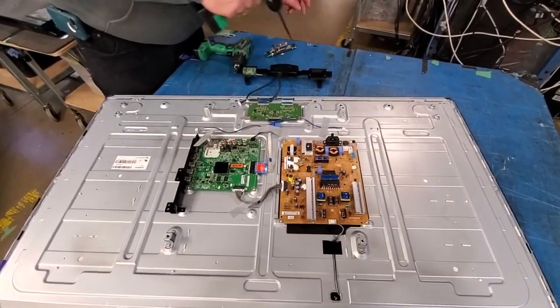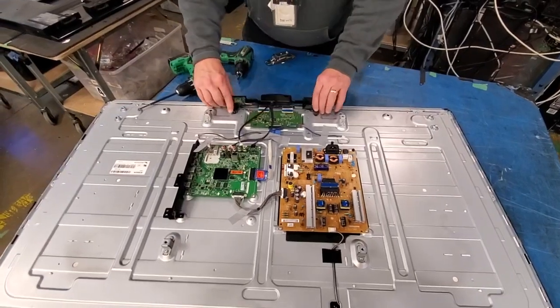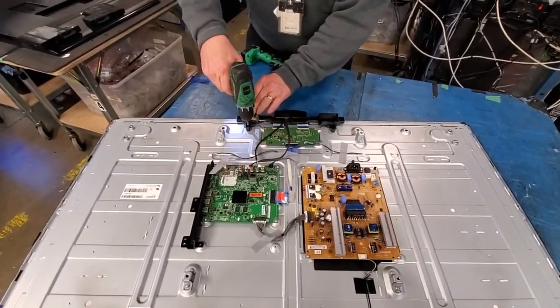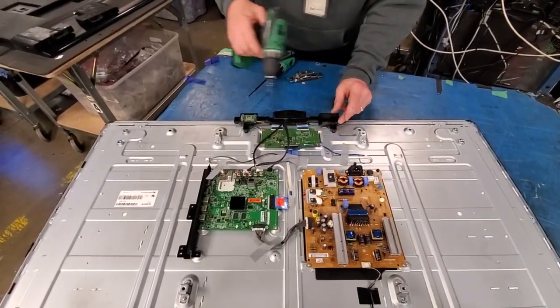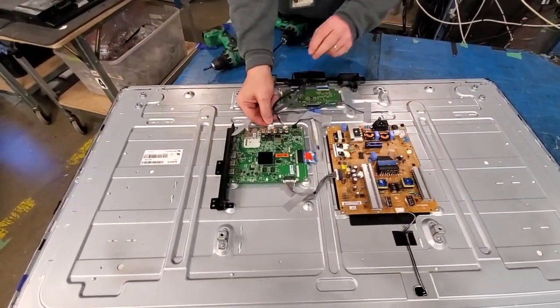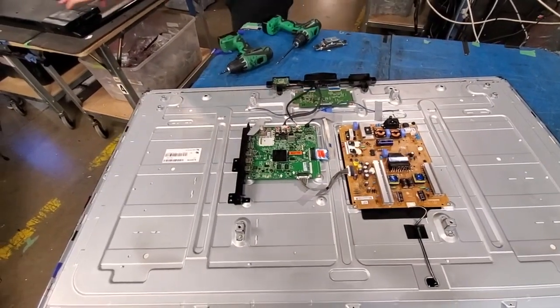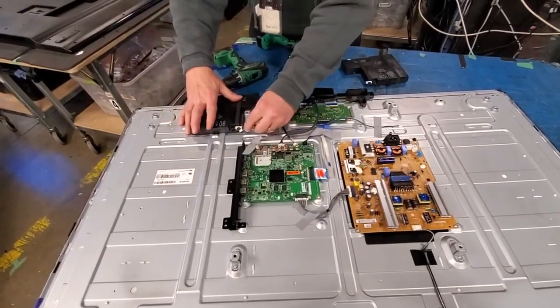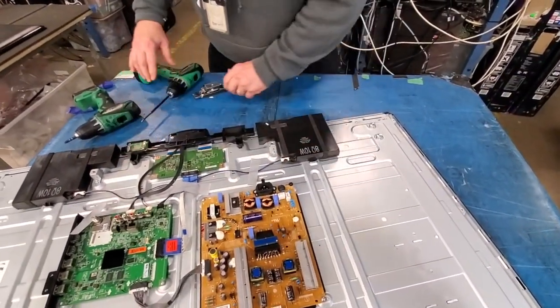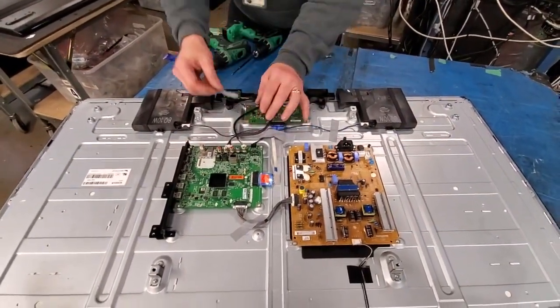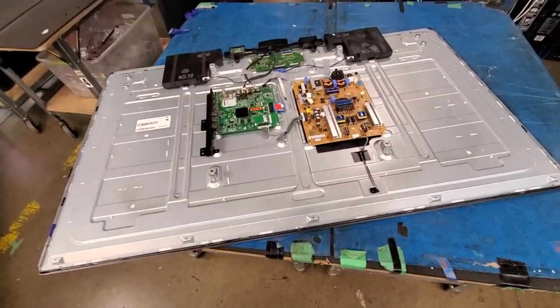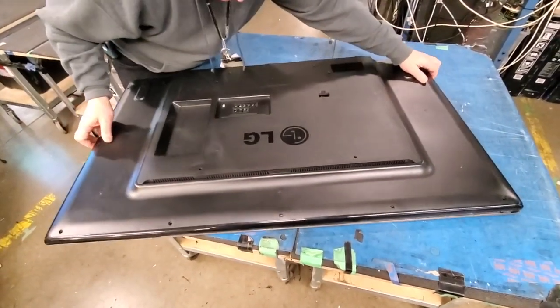Reinstall the black cover and reconnect the cables to the main board. Reinstall the speakers and reconnect them. Reinstall the back cover on the TV and install the screws.